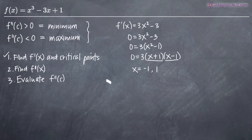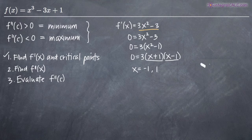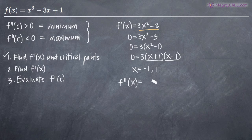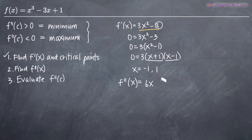That's the end of step 1. Now step 2 is to find the second derivative. Our first derivative is 3x squared minus 3. Using the power rule again, the negative 3 goes away because it's a constant, and the derivative of any constant is zero. So our second derivative is f double prime of x equals 6x.